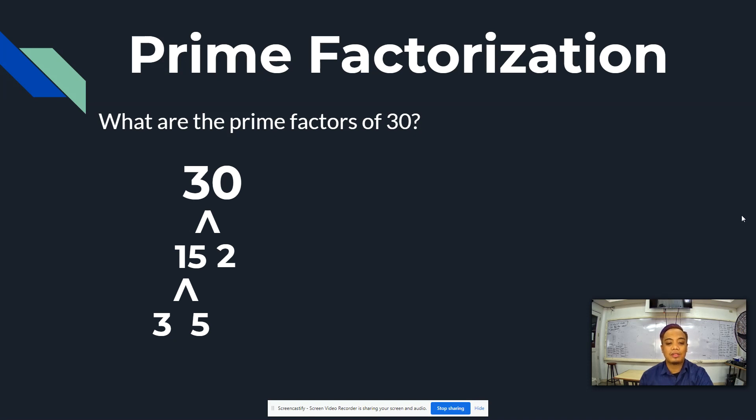3 is a prime factor and 5 is a prime factor. So the prime factors of 30 are 3, 5, and 2.